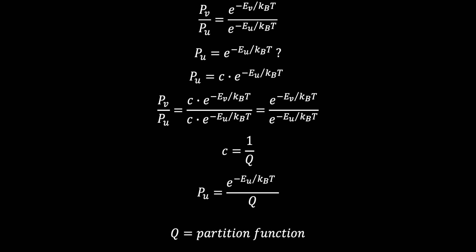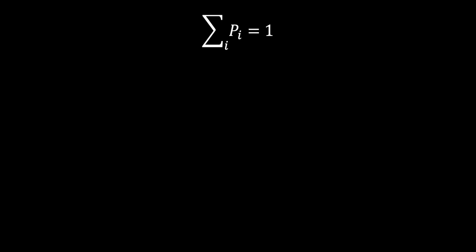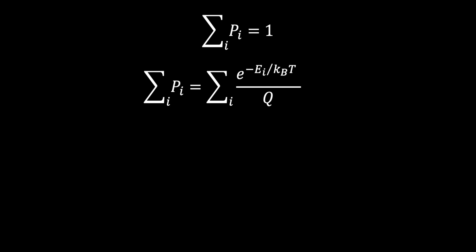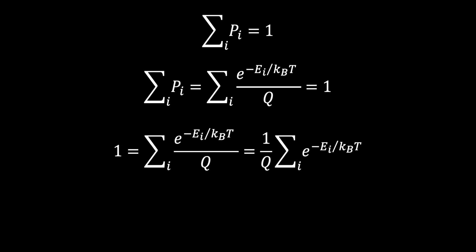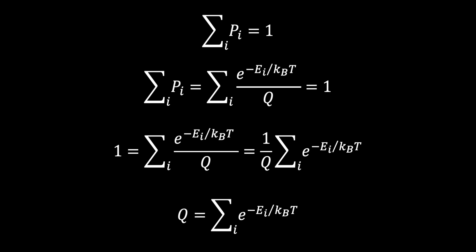Consider that if we sum over all possible states, the total probability must equal 1. Thus, the sum over all states of e raised to the negative energy of a state divided by kbT, all over q, must equal 1. Since q is a constant, we can factor out 1 over q, and relatively easily we see that q must equal the summation of e raised to the negative energy of each state divided by kbT, over all states. This is the definition of the partition function, and for a given system it is a constant.